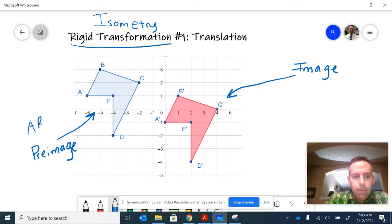And the reason I know I have pre-image and image is because of the labeling. So originally I had polygon A, B, C, D, E here on the left, which is very typical in our notation.